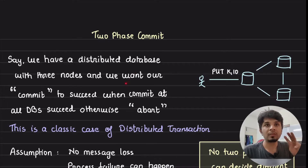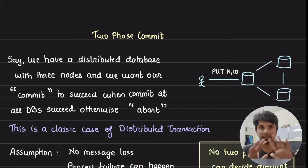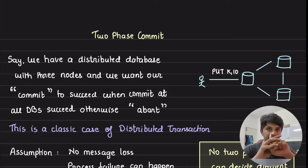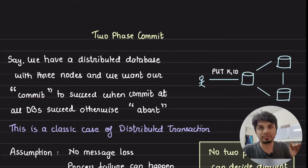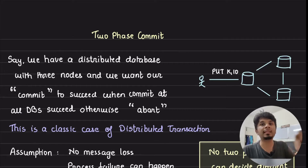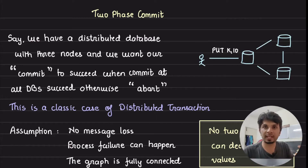Say we have a distributed database with three nodes and we want our commit to succeed when the commit at all the databases succeeds. A simple example: say we are doing a put(k, 10), and this write should be successful only when the write is made on all three databases. If it fails on any one of them we should not be considering this write at all. This is a classic case of a distributed transaction where either everyone succeeds or if even one of them aborts, everything aborts.